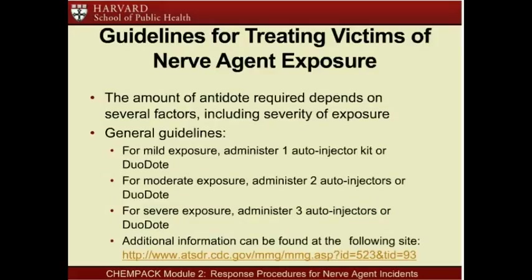The amount of antidote required to treat nerve agent exposure depends on several factors, including the severity of exposure. If approved and trained to do so, responders should assess each patient's degree of symptoms and administer 1 to 3 Mark 1 or similar kits to adult patients showing evidence of nerve agent exposure. As a general guideline, administer 1 auto-injector to patients demonstrating mild symptoms, 2 for those with moderate exposure, and 3 to those with severe exposure. Responders should continuously evaluate each patient's status and update the treatment plan as needed.